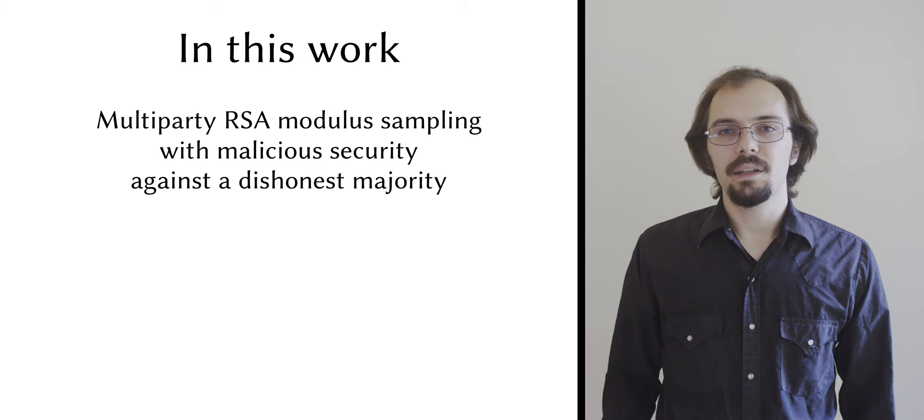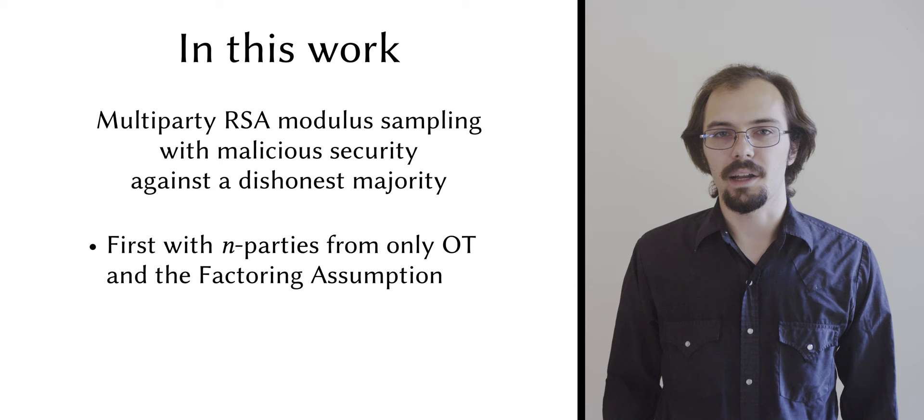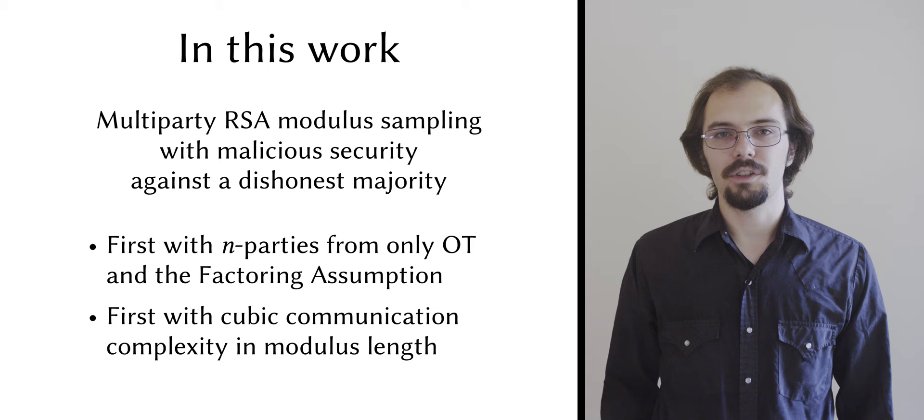In this work, we introduce a new protocol for distributed RSA moduli sampling with malicious security against a dishonest majority in the UC model. Ours is the first such protocol from only oblivious transfer and the factoring assumption to support an arbitrary number of parties, and so far as we know, the first to achieve cubic complexity or better in the length of the modulus.